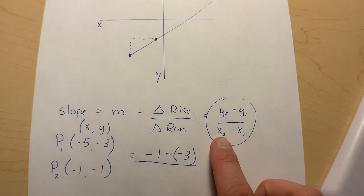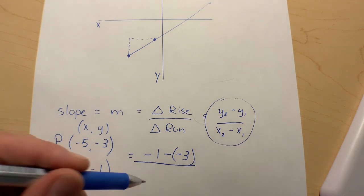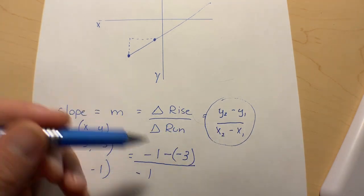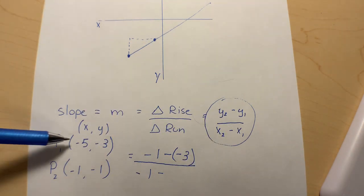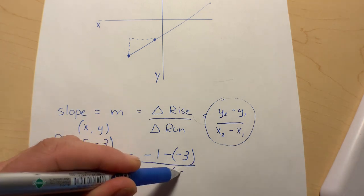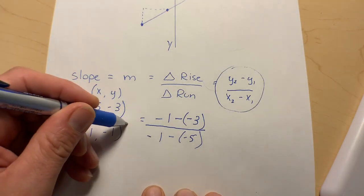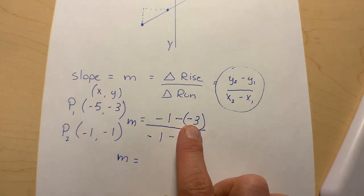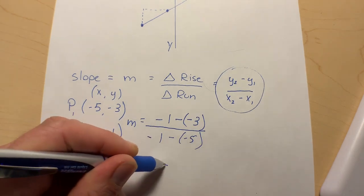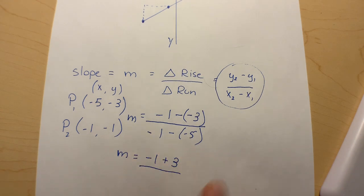Next, x₂. So x₂ is the x value for point number two, which is -1. There's a subtraction in the formula, and then x₁ is the x value for point number one, which is -5. Again, I'm just going to separate those two subtraction signs with a set of brackets. This will give us m or slope, and we can clean it up a little bit. Negative times a negative will give us a positive, so this really becomes -1 + 3 and on the bottom, -1 + 5.